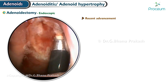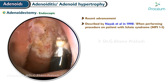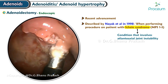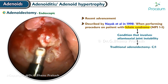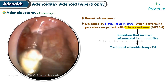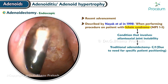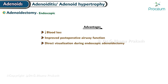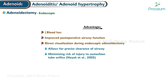Endoscopic adenoidectomy is a relatively recent advancement in surgical management of adenoid hypertrophy, initially described by Nyak et al. in 1998 when performing the procedure on a patient with Scheie syndrome (MPS1S), a condition involving atlanto-axial joint instability — where traditional adenoidectomy is contraindicated due to specific positioning requirements. A comparative study between conventional and endoscopic techniques revealed the benefits of the endoscopic approach, including reduced blood loss and improved post-operative airway function. Direct visualization allows for precise clearance of the airway while minimizing risk of injury to the Eustachian tube orifice (Nyak et al., 2005).